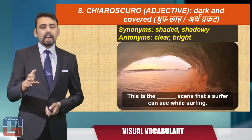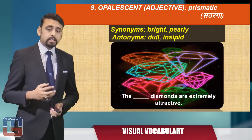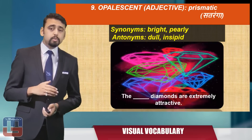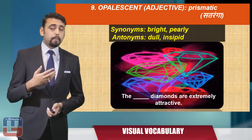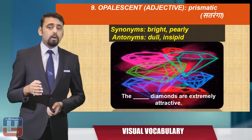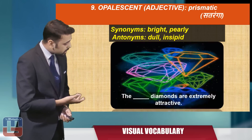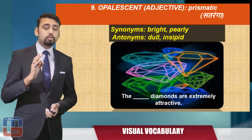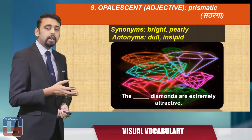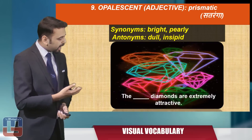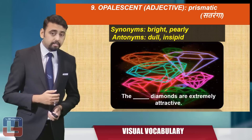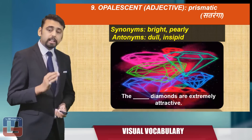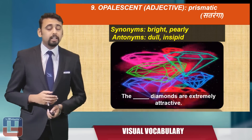Here's the next word: 'opalescent.' Opalescent is an adjective meaning prismatic. The synonyms are 'bright' or 'pearly,' and the antonyms are 'dull' or 'insipid.' An image of diamonds is shown, acting on the VIBGYOR concept. The sentence: 'The blank space diamonds are extremely attractive.' The answer: 'The opalescent diamonds are extremely attractive.'